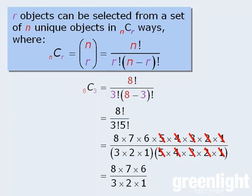Now here comes a very important observation. Notice that the numerator now consists of the first three terms of 8 factorial, and the denominator is 3 factorial. It seems that the number 3 plays an important role in this calculation. But where does it come from?